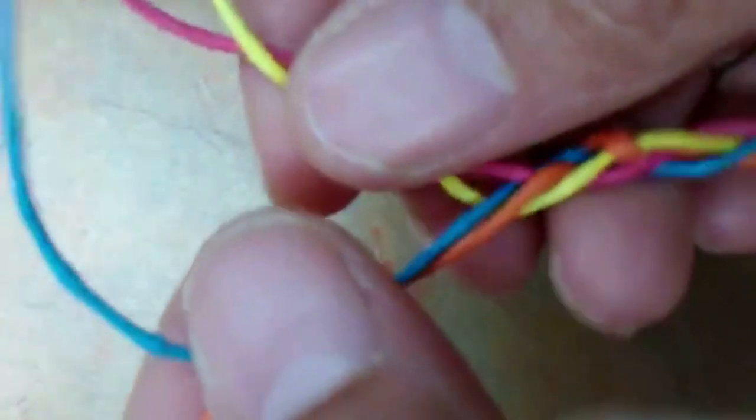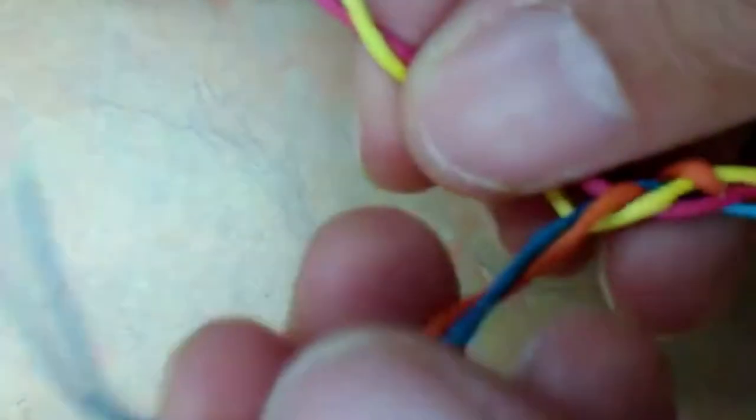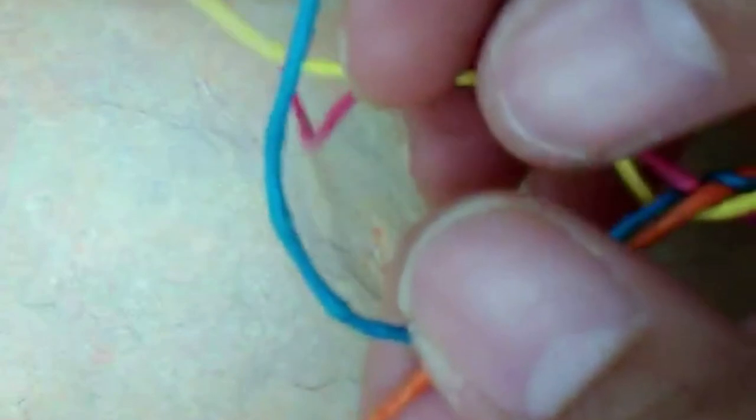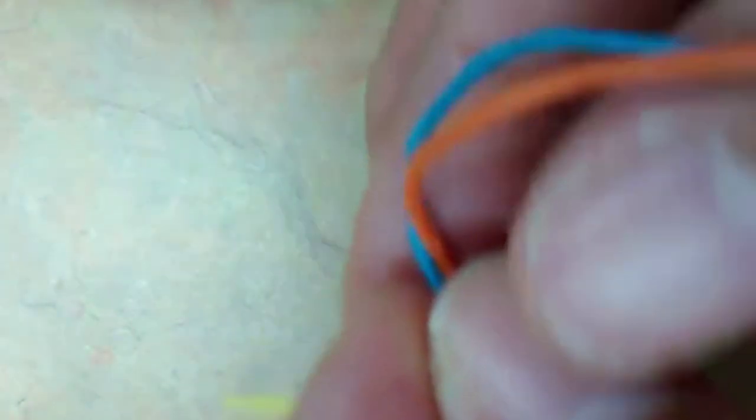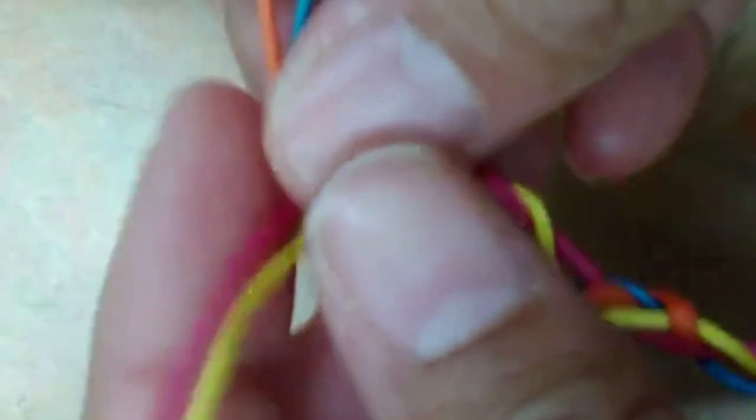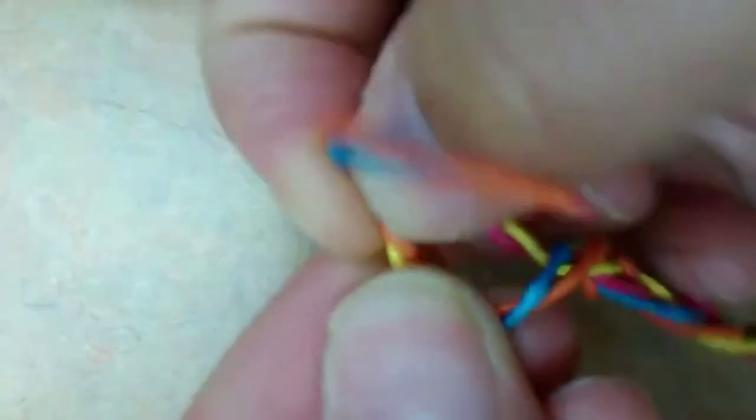Once your bracelet's done being braided, you can make a little knot at the bottom. Take two strings in one hand and two strings in the other and make a simple knot. If you want, you can make a double knot. I think I'm going to make a double knot on mine.